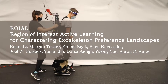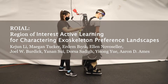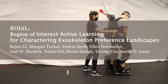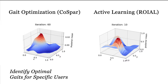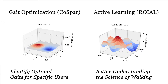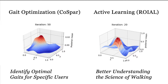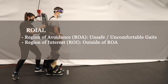This work presents and demonstrates ROYLE, a region of interest active learning framework for categorizing user preferences in exoskeleton walking. While previous work focused on gait optimization, this work learns users' entire exoskeleton gait preference landscapes. Categorizing such landscapes allows us to study patterns across users and gain insight into the underlying science of walking.